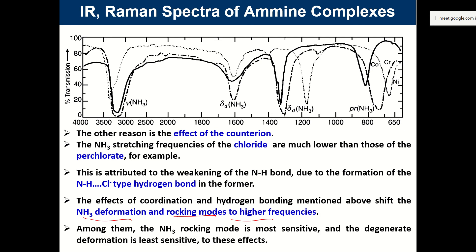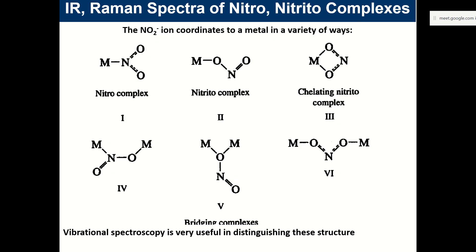Cl⁻ can form hydrogen bonds with NH while perchlorate cannot, resulting in greater weakening of the NH bond for chloride salts. The effects of coordination and hydrogen bonding also shift the NH₃ deformation and rocking modes to higher frequency regions. The rocking mode is more sensitive than the degenerate deformation to these effects.